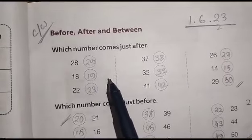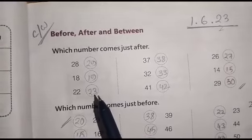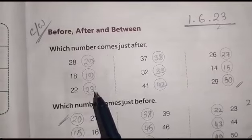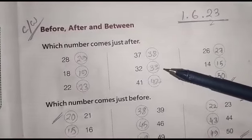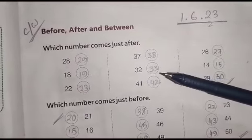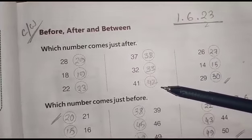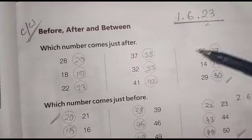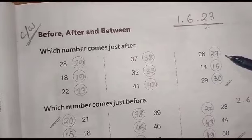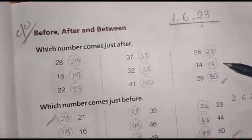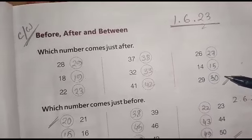After 22 is 23. After 37 is 38. After 32 is 33. After 41 is 42. After 26 is 27. After 14 is 15. After 29 is 30.